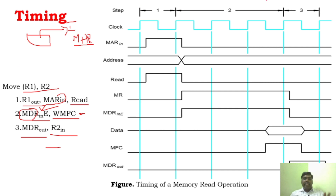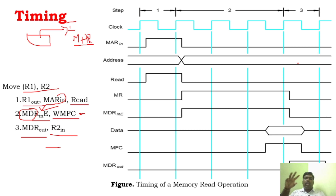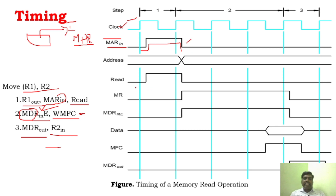So you can see this very important diagram where you can understand the timing. As I said, whatever processor operation it performs is within a clock cycle. You can see the clock signal here. Whenever a particular address reaches the MAR, it is enabled - you can see it is enabled. And once MAR is enabled, it means it initiates the read cycle.